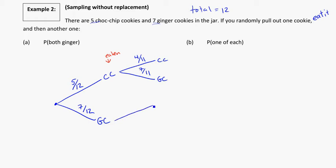Looking at the other situation: if I eat a ginger cookie first, the probability of getting a chocolate cookie second — well, there are still five of them left, because I haven't eaten one yet. That's five out of eleven, because I did eat one out of the total. And for a ginger cookie, I've eaten one of those, because my first choice was ginger, so that takes me down to six out of eleven for the ginger cookie.